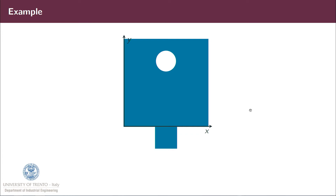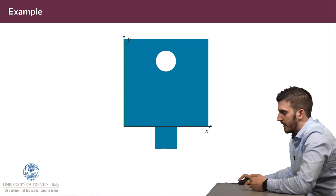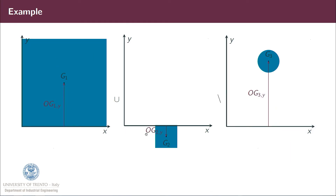Let's see a small example. We have a body composed of more pieces and we want to find the center of mass of this body. We can divide this domain in three subdomains: the bigger square, the small square, and the circle, which is actually empty. We can exploit the formulation developed for the system of M particles, treating these three bodies as three particles with mass centered at the center of mass of each subdomain. We have the center of mass of the first square in the middle, the center of mass of the small square, and the center of mass of the circle. We sum the first two and subtract the third to obtain the center of mass of the overall domain.